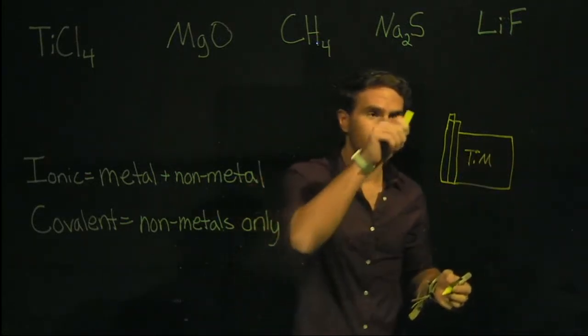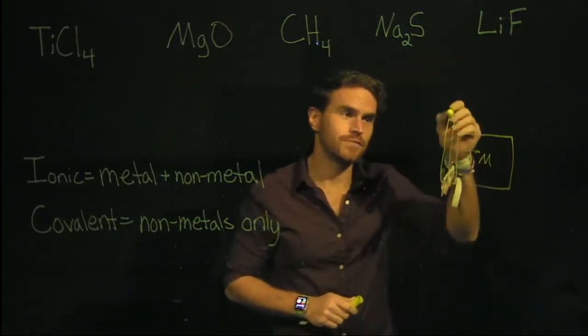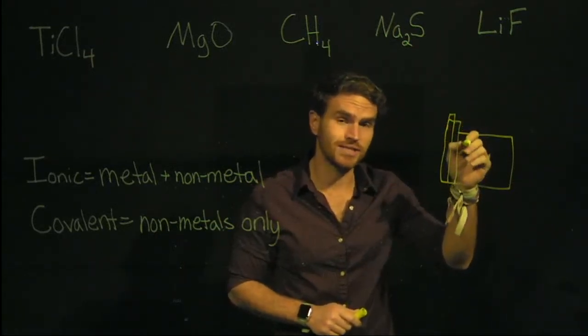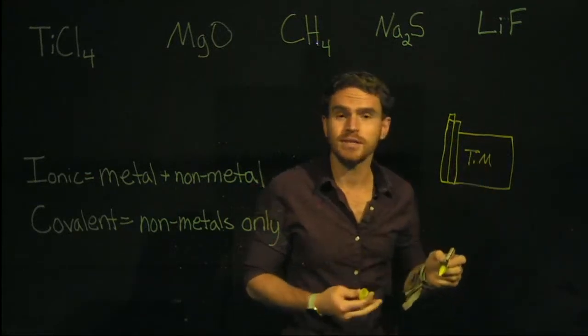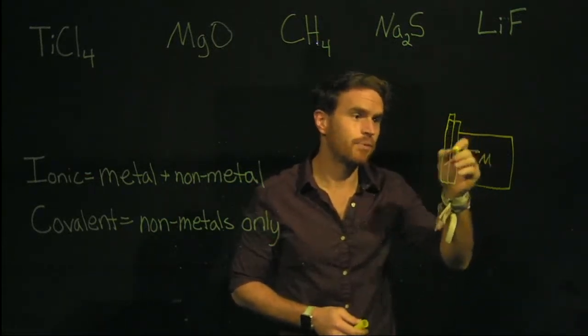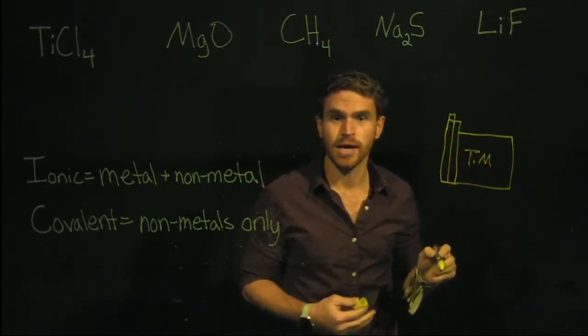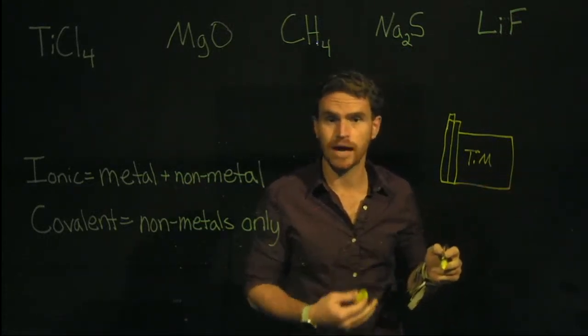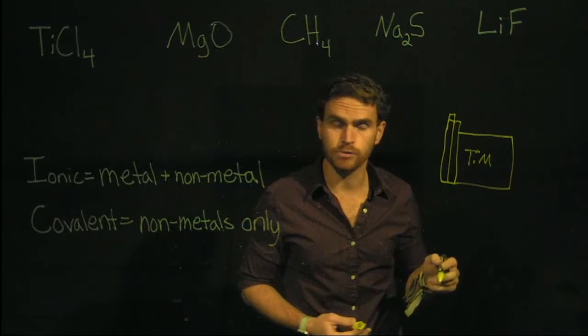If you memorize the names of the groups - alkali earth metals, alkaline earth metals, and transition metals - you can easily identify that any atom present in this location is going to be what's called a metal. And it's in the name: transition metals, alkali metals, alkaline earth metals.